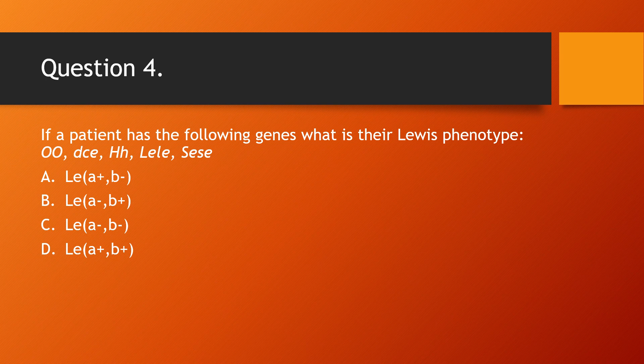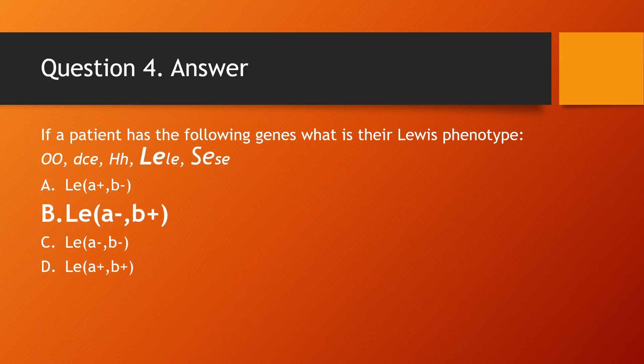Question 4: If a patient has the following genes — OO, lowercase d, CE, capital H, lowercase h, capital LE, lowercase le, capital SE, lowercase se — what is their Lewis phenotype? Choices: A) Lewis A positive B negative, B) Lewis A negative B positive, C) Lewis A negative B negative, D) Lewis A positive B positive. The answer is Lewis A negative B positive. The person has the capital LE and the capital SE gene, which produces the Lewis B antigen.